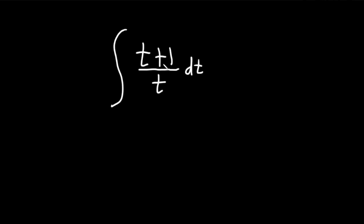Hi, in this problem we're going to integrate this. We have t plus 1 over t and we're integrating with respect to t. So the goal is to basically get rid of this t here on the bottom.